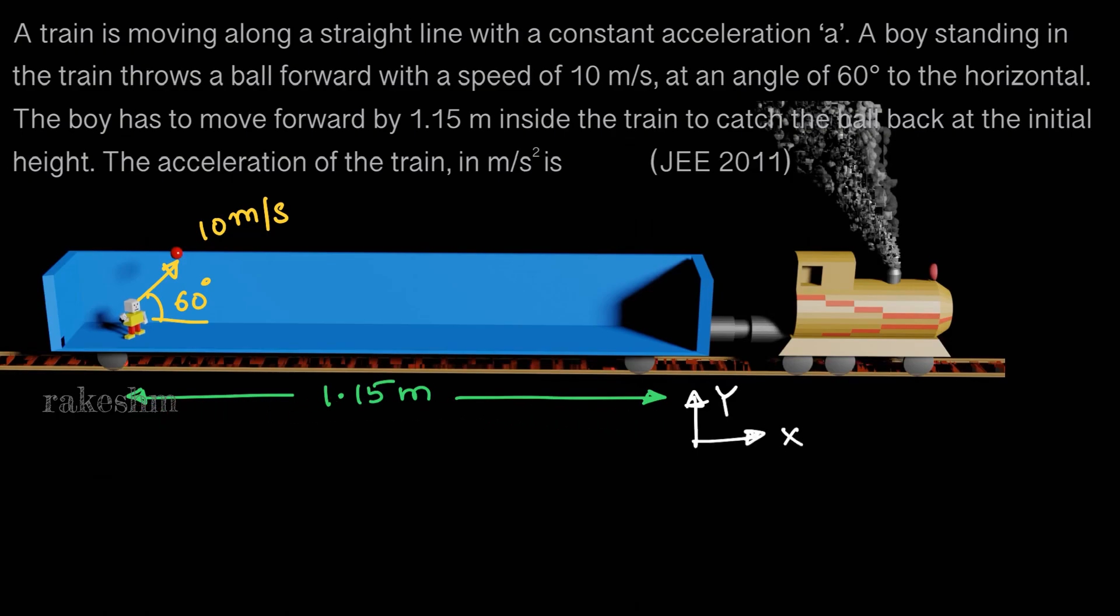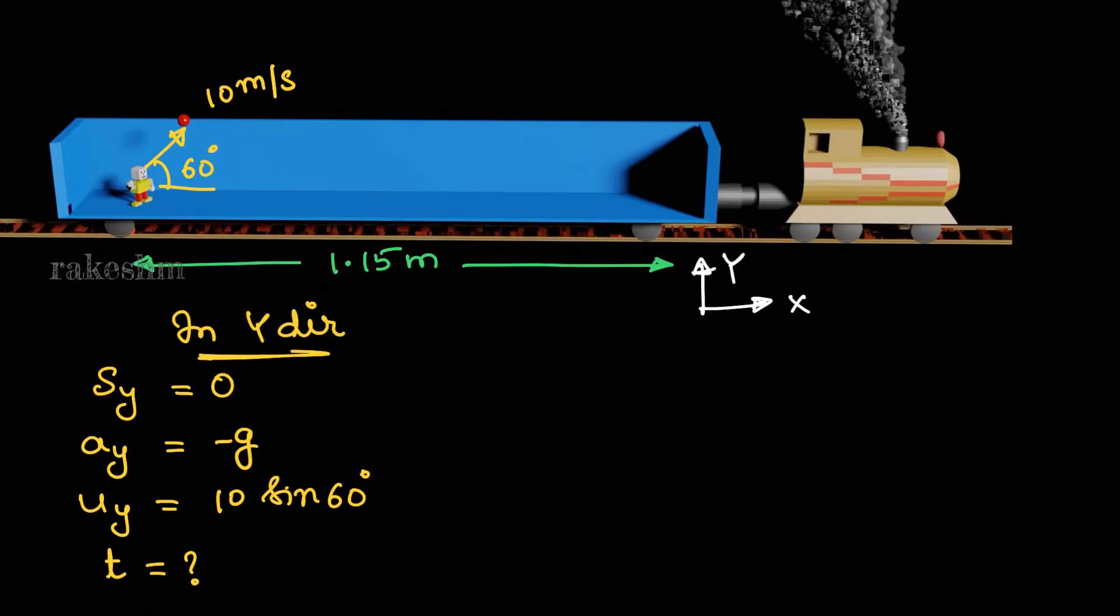The time of flight of this is 2u sin theta by g. Let us just derive that. So what we are doing is we are writing in y direction. The displacement in the y direction is 0, acceleration in the y direction is minus g because I will take upwards as positive and downwards as negative. The y component of initial velocity is u sin theta, so 10 sin 60.